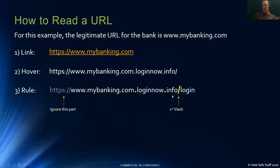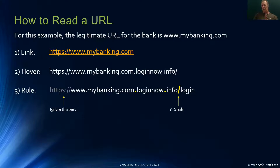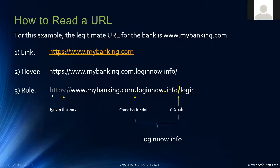Now you look to the left of the slash and you're looking for the domain extension. In this one here we've got .info - that's one part in the domain extension. It could be .com.au - that's two parts. The simple rule is: if there's one part to the domain extension, go left two dots; if there's two parts like .com.au, go left three dots. So here we've got .info - one part - go left two dots. While reading left to right gives you mybanking.com, when you apply the rules it's loginnow.info.